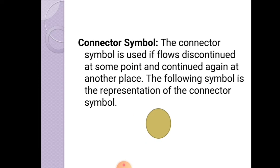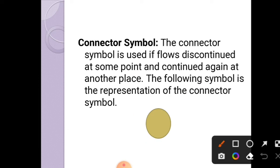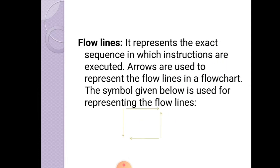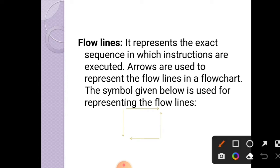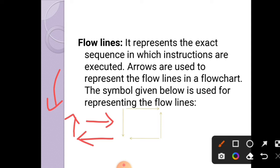The connector symbol is used when the flowchart flow is disconnected at some point and needs to continue again at another place — in that situation we use the connector symbol. Flow lines are used to represent the flow of data, whether bottom to top, left or right, and are used to represent the flow of information.